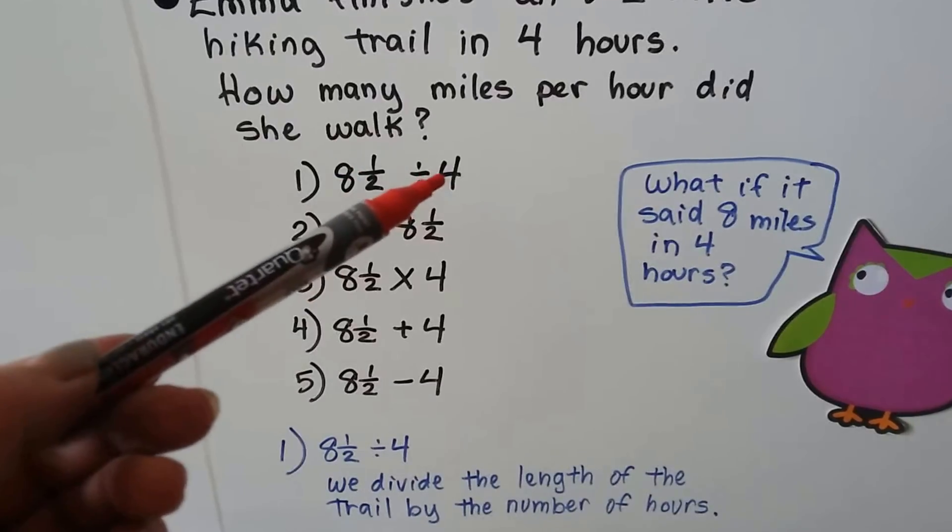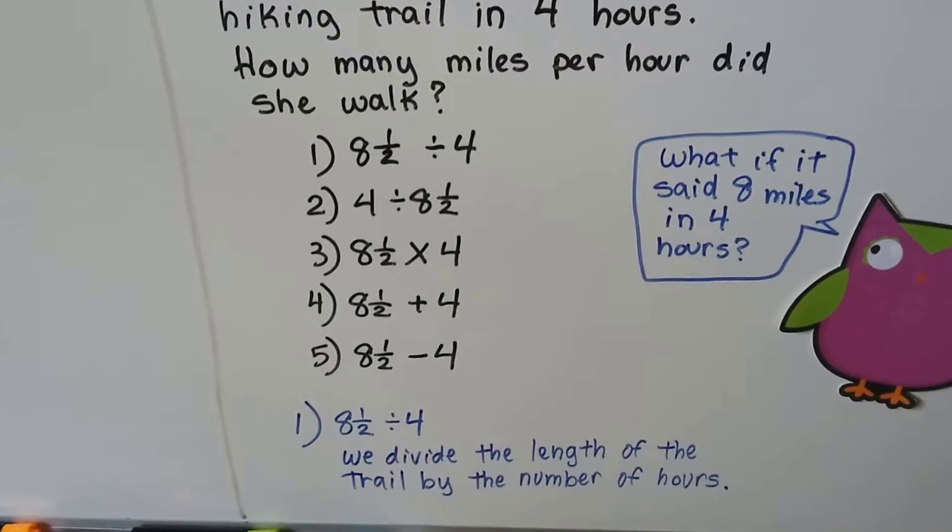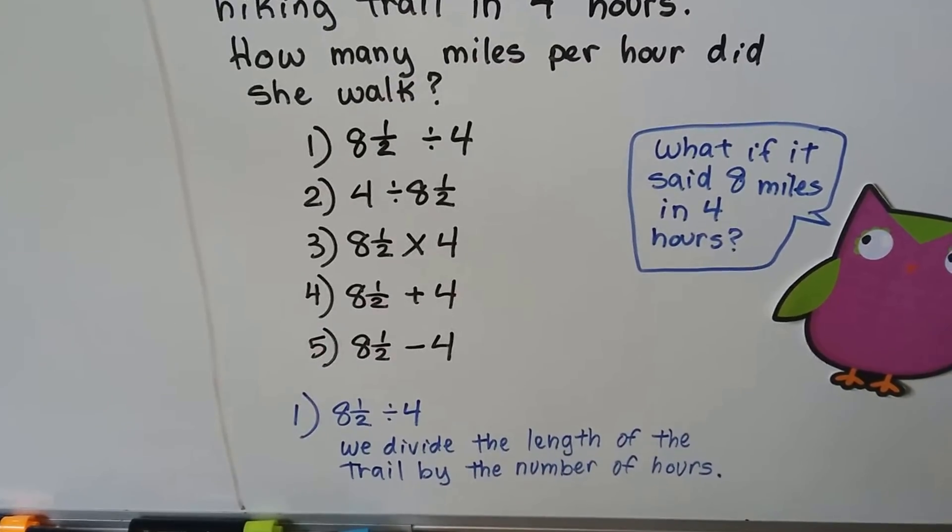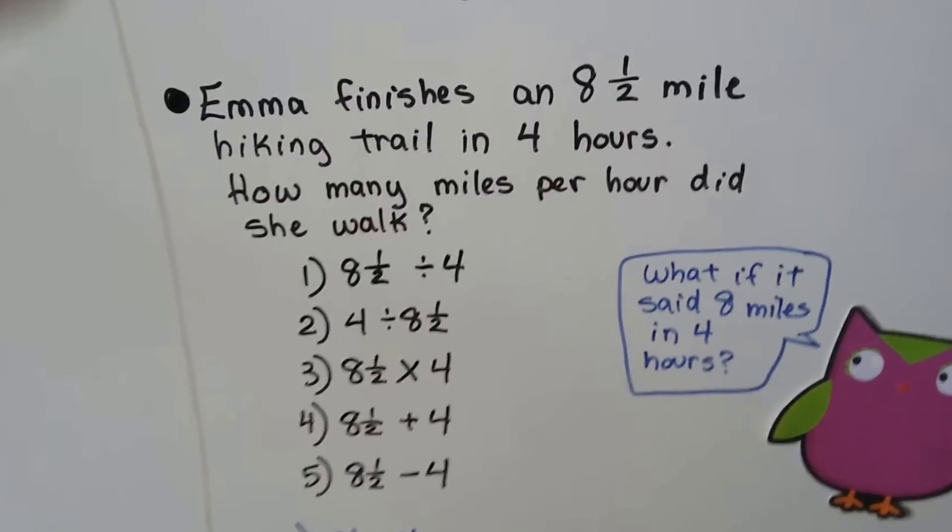That's the length of the trail. That's how long it took her. If we do this division problem, it'll tell us how many miles per hour she walked. We divide the length of the trail by the number of hours. Okay? So sometimes taking the fraction away can help you.